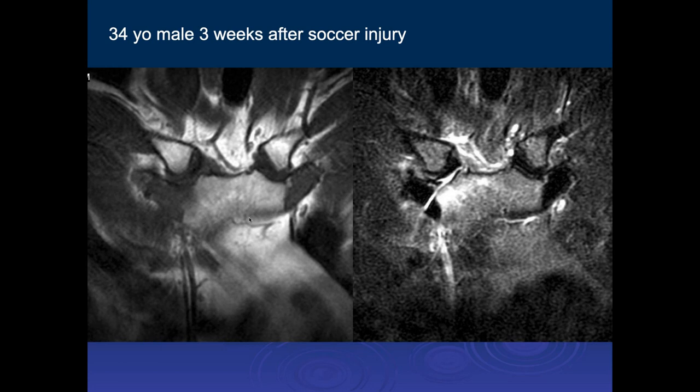We have a 34-year-old male three weeks after a soccer injury, and we have two coronal images through the sternoclavicular joints. There's fluid signal intensity and soft tissue edema within the right sternoclavicular joint extending beneath the clavicle, and some edema within the adjacent sternum. This is compatible with injury of the sternoclavicular joint. This one is also extending into the first rib, and you can see the fractures primarily going through the cartilaginous articulation of the sternum and first rib.